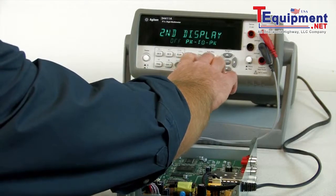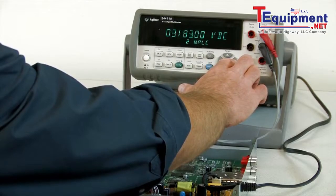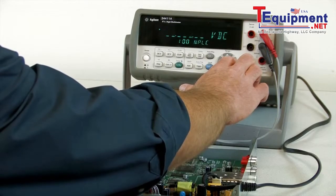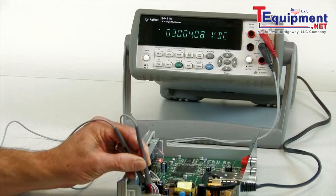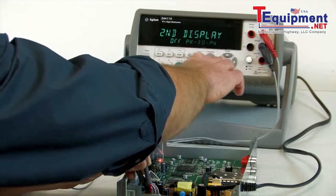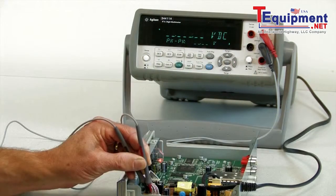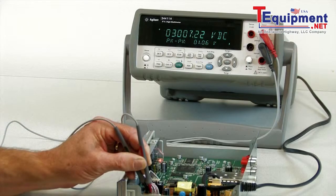So I'll go ahead and make that change. I'm going to increase our integration time. Now we should see a more stable DC volt reading. I'm going to turn the second display back on.